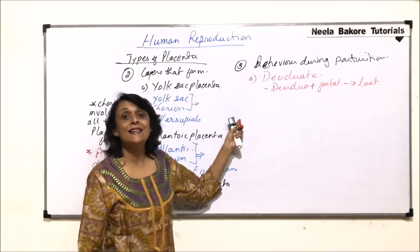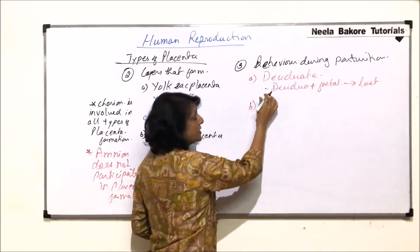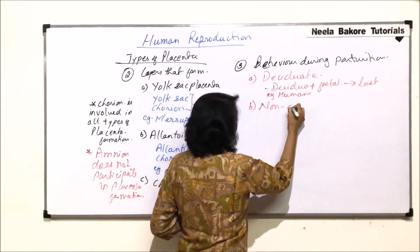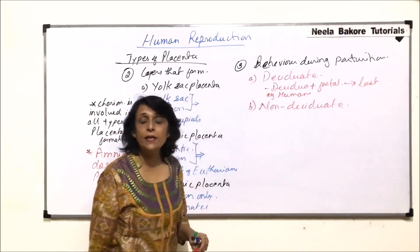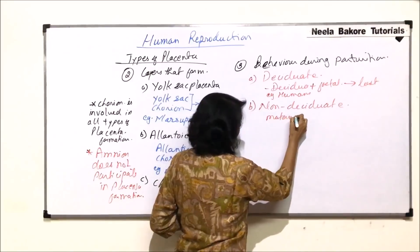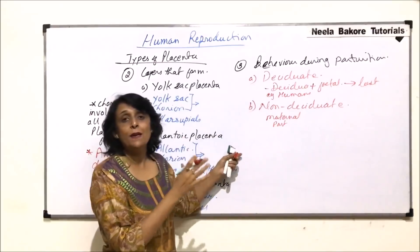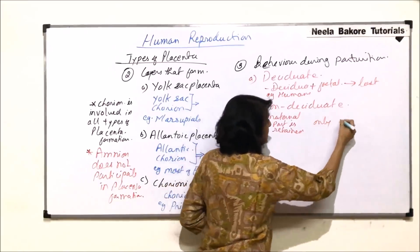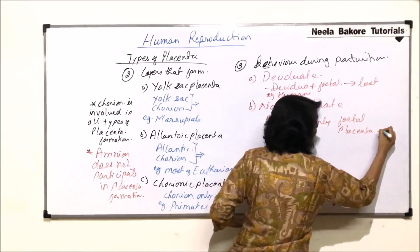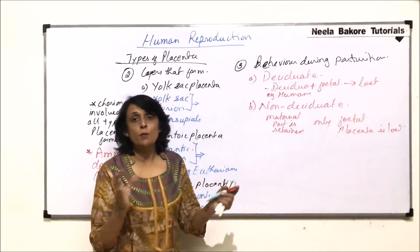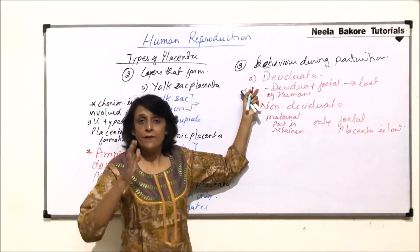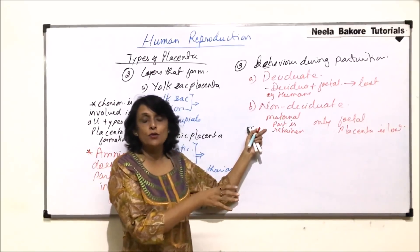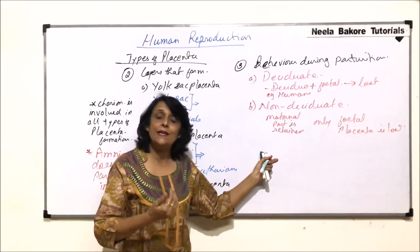Deciduate placenta is seen in humans, or primates. The second type is called non-deciduate. In non-deciduate, the maternal part is retained by the female animal's body, and only the fetal placenta is lost. So the fetal part is shed after parturition, while the maternal tissue remains in the uterus and gets reabsorbed.